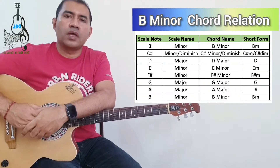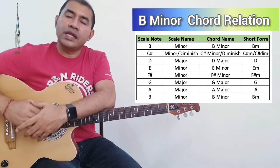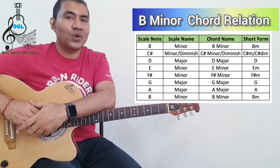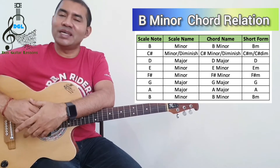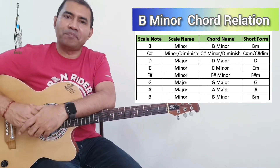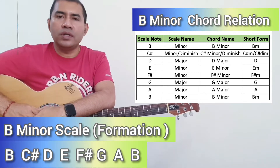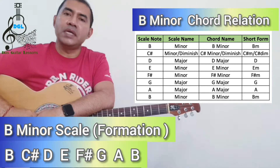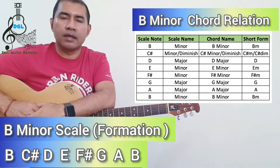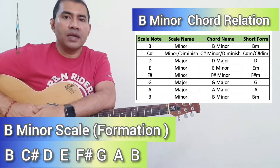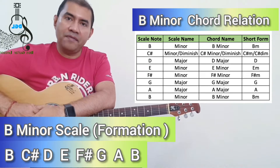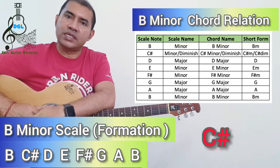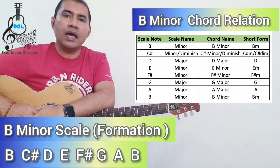Today we will learn how the B minor chord is formed. B minor chord is related with the B minor scale. The B minor scale has two sharp notes: C sharp and F sharp.